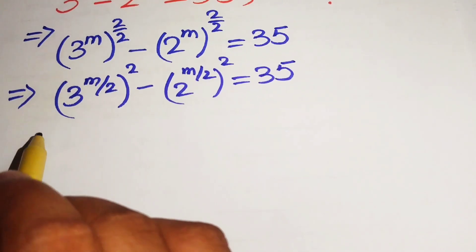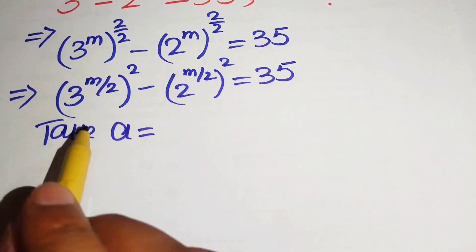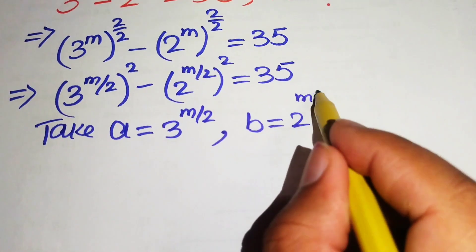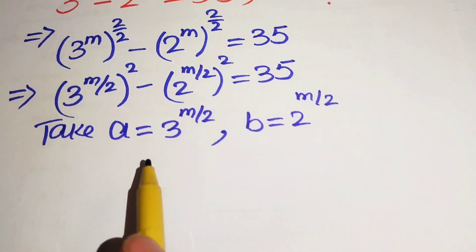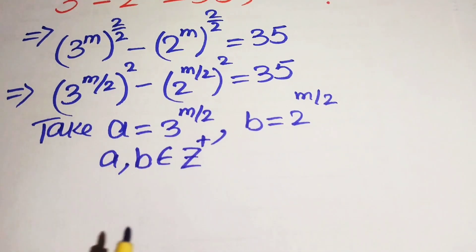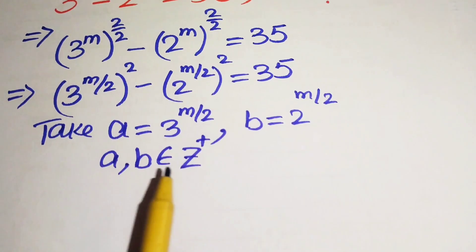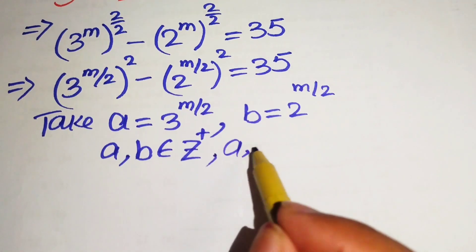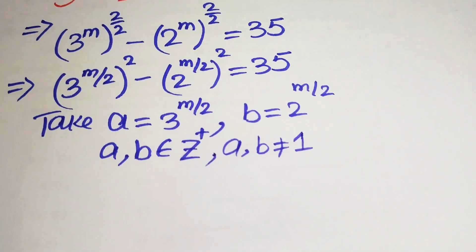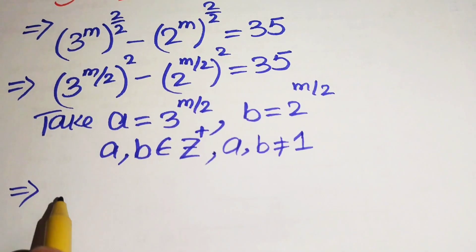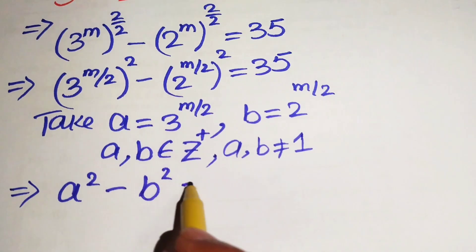We let a equal 3 to the power of m over 2, and b equal 2 to the power of m over 2. Note that a and b must be positive, since the exponential function always gives positive values, and we choose non-1 values. Substituting into the equation gives us a squared minus b squared equals 35.